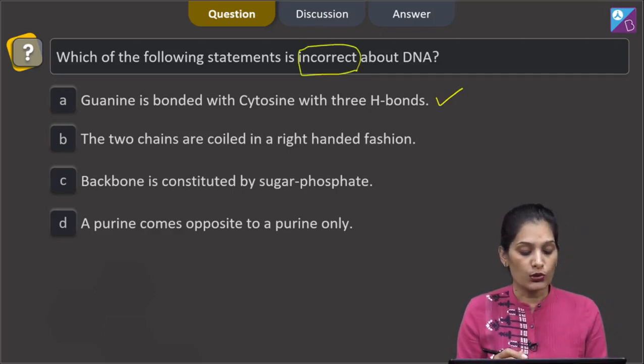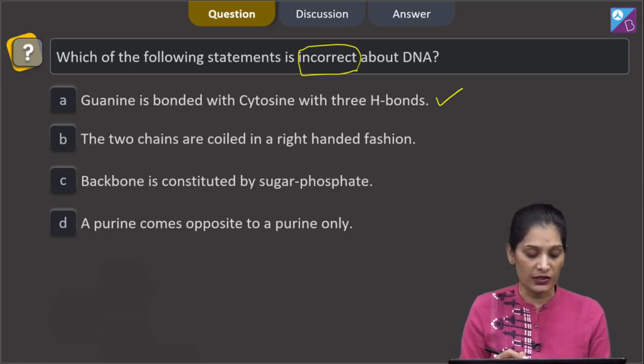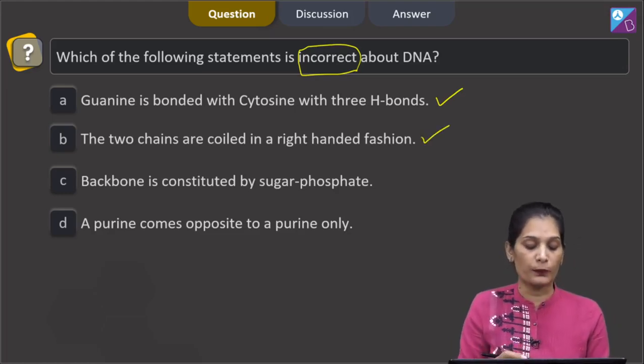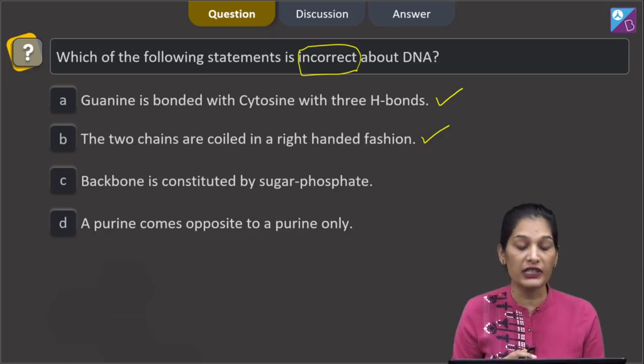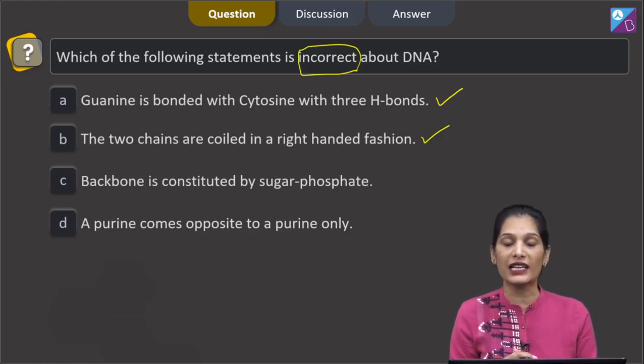B, the two chains are coiled in a right-handed fashion. This is also true that the two chains of DNA are coiled in a right-handed fashion.